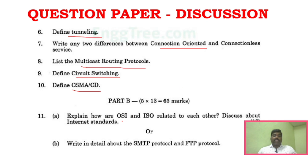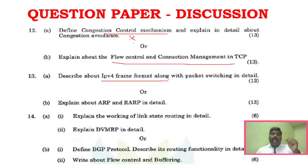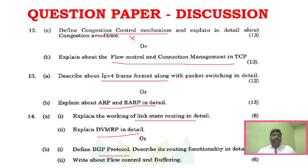For Part B of the April-May 2023 paper: POP3, OSI and ISO model, SMTP and FTP protocols, congestion control mechanism — which is a very important and sure-short question — flow control and connection control in TCP, IPv4 frame structure, IPv6 comparison, ARP and RARP protocol, and for Unit 4: link state routing, DVMRP, BGP, and flow control and buffering.